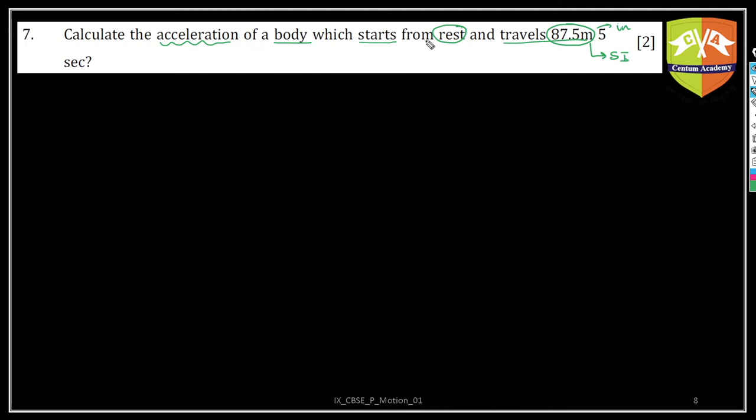Which starts from rest, so let's write down what is given. Basically you have to find out acceleration, so this is not known. Start from rest means initial velocity of the object, u, is equal to zero.